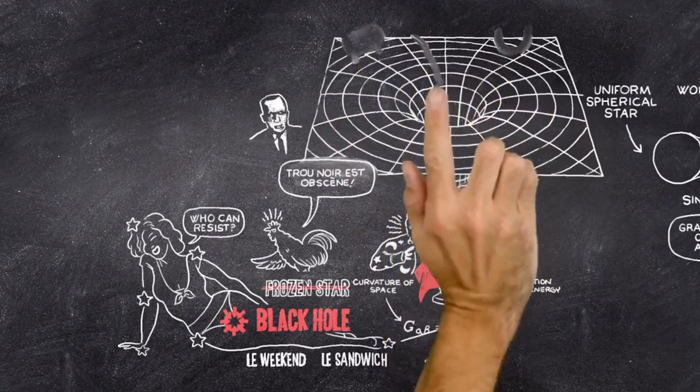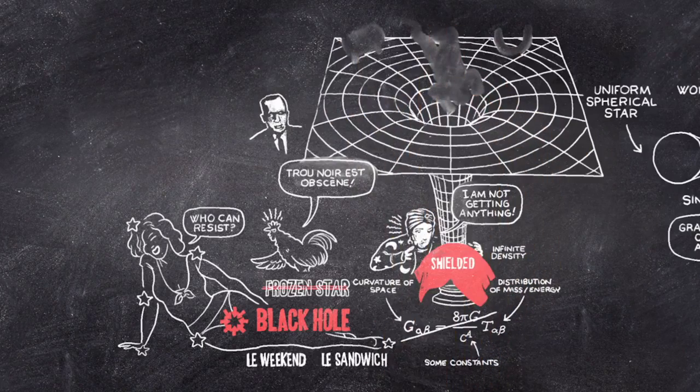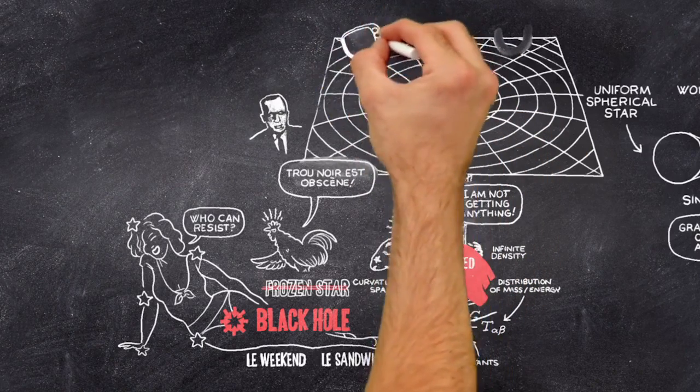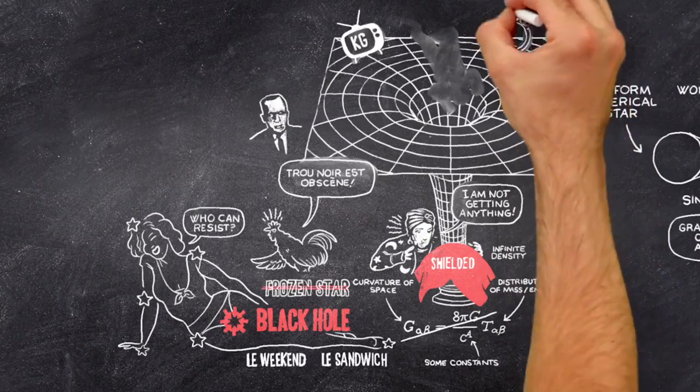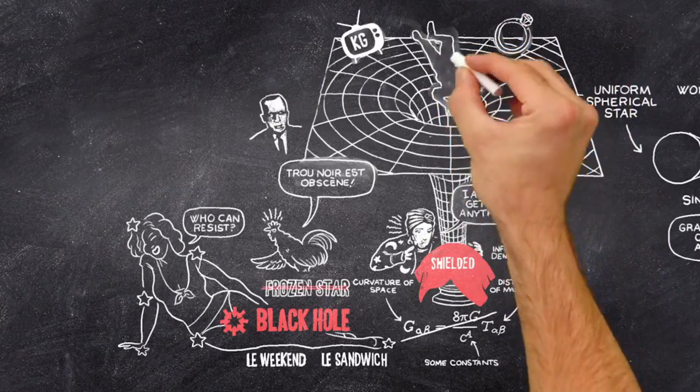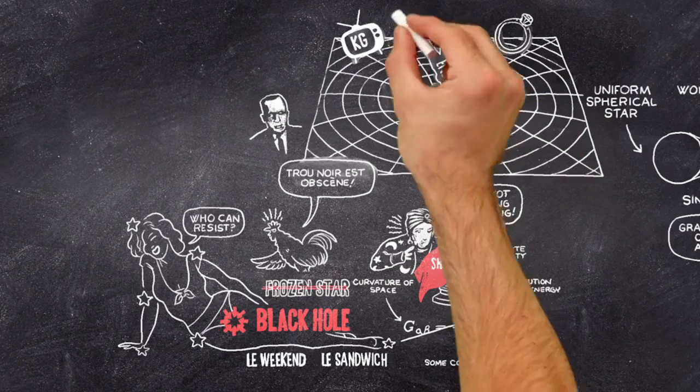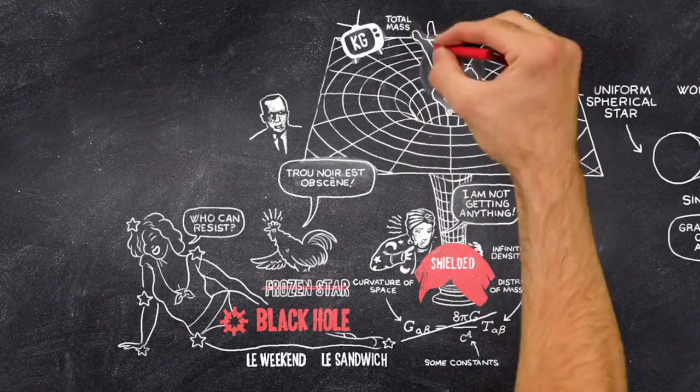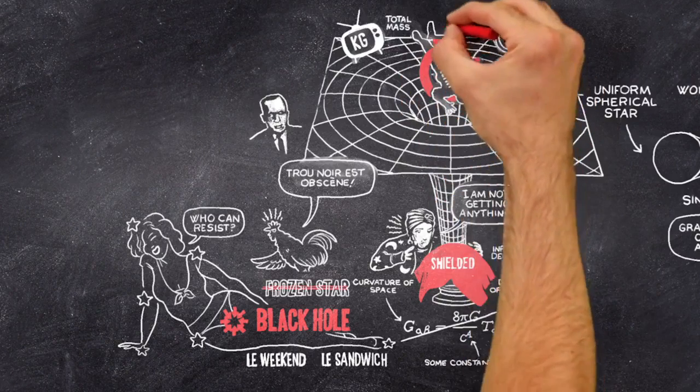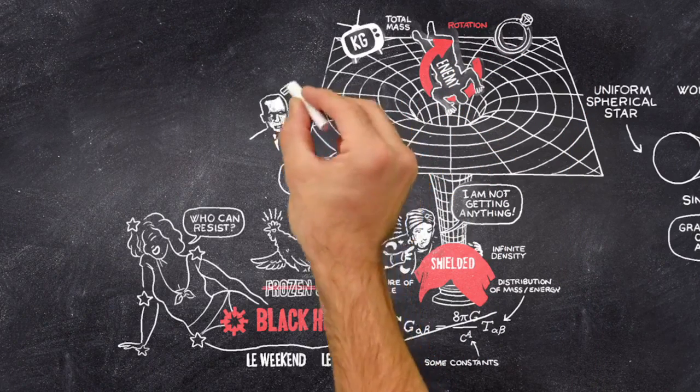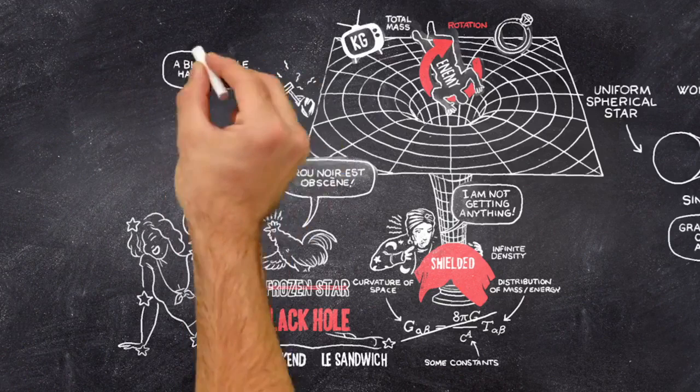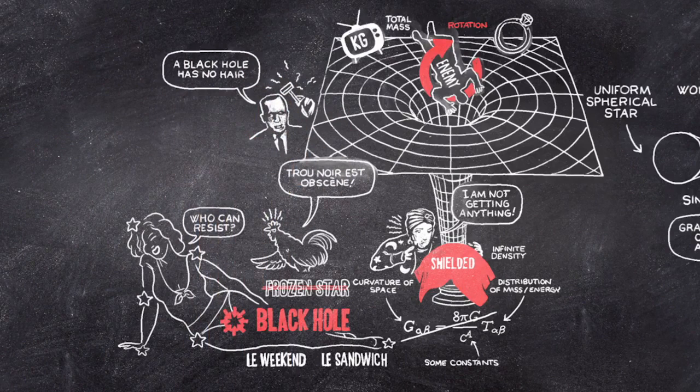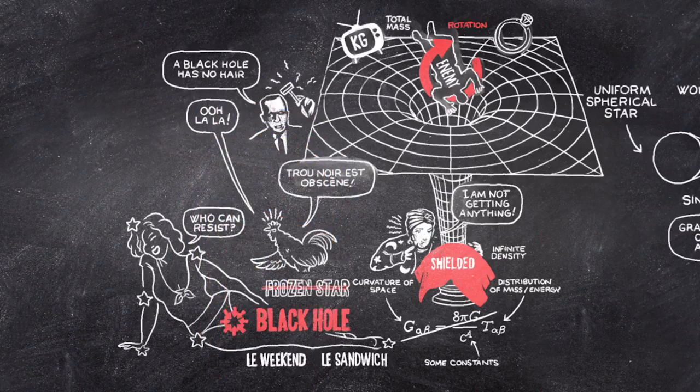From the outside, you can't tell what is inside a black hole. You can throw television sets, diamond rings, or even your worst enemies into a black hole, and all the black hole will remember is the total mass and the state of rotation. John Wheeler is known for expressing this principle as, a black hole has no hair. To the French, this just confirmed their suspicions.